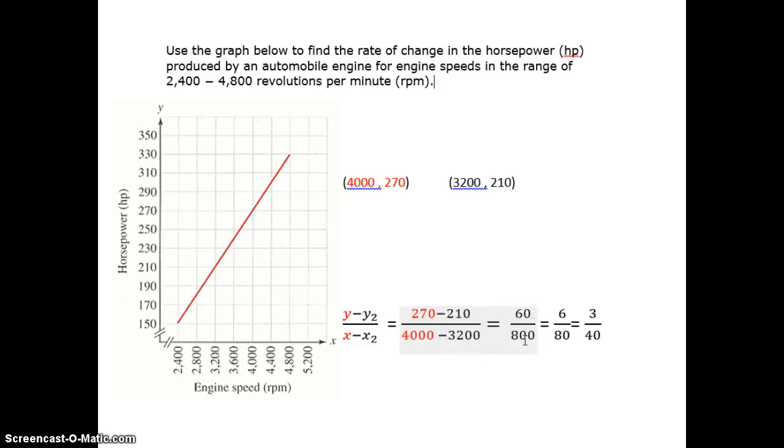That gives you 60 over 800. Now we're just going to reduce here. If we divide top and bottom by 10, you get 6 over 80, and now I divide by 2, and I get 3 over 40. And that's as far as I can reduce, and that is the slope of the line.